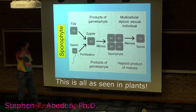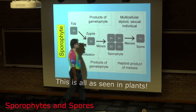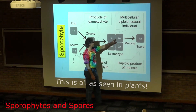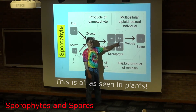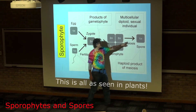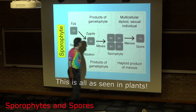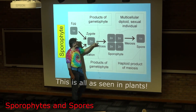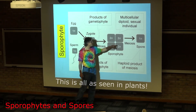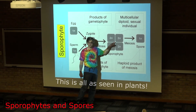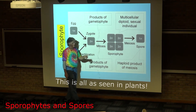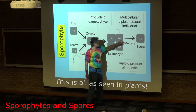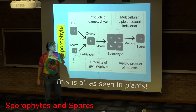And the sporophyte, some of its cells go through meiosis to make the spores. So this is going from diploid to haploid — haploid making the diploid, mitotically, multiple diploid cells. And then you've got meiosis generating the haploid state.